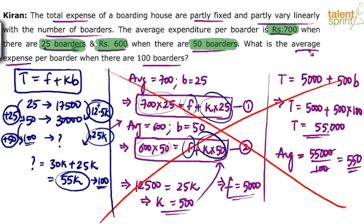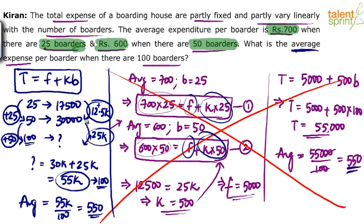For 100 people the total is 55,000. Average = 55,000 ÷ 100 = 550. Same answer: 550. This is all mental calculation — 25 people increase to 50, expenditure increases by 12,500. So adding 50 more people incurs Rs. 25,000 extra. 30,000 + 25,000 = 55,000 divided by 100 gives 550 as the final answer.